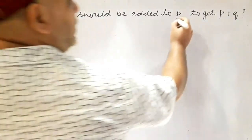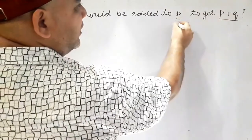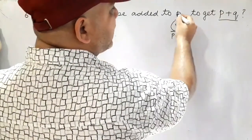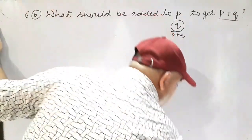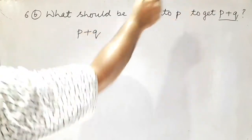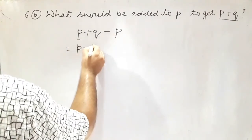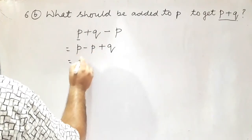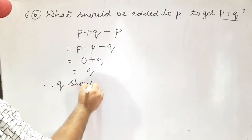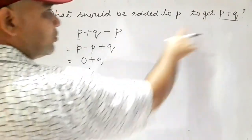What should be added to p to get p plus q? Quite simple: q should be added, and then it would be p plus q. But from where do we get q? We subtract p from p plus q: (p plus q) minus p. Collecting like terms, p minus p equals zero, so we get q. Therefore q should be added to p to get p plus q.